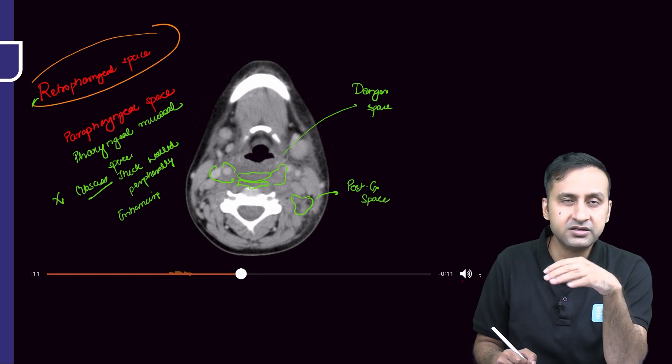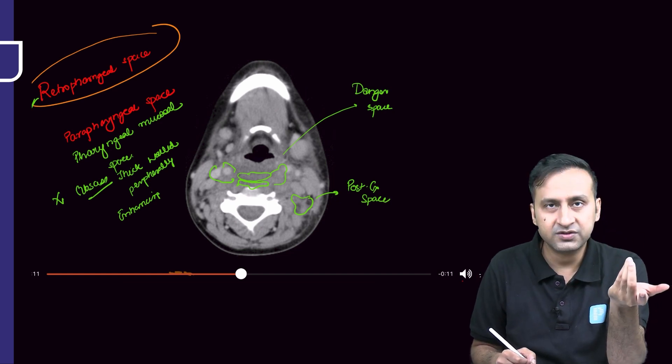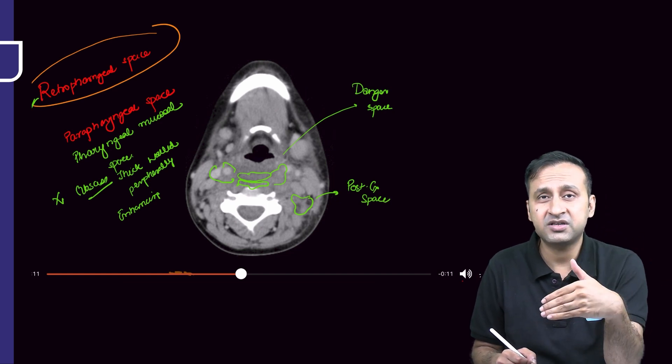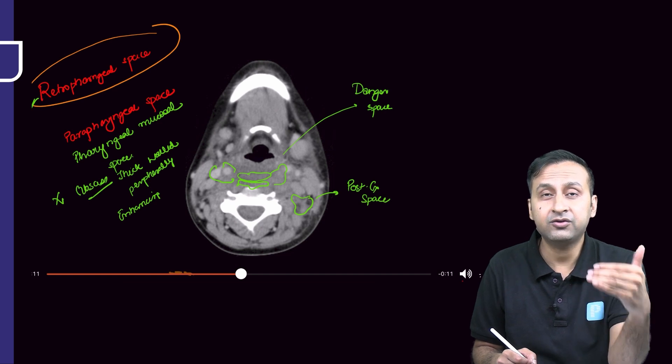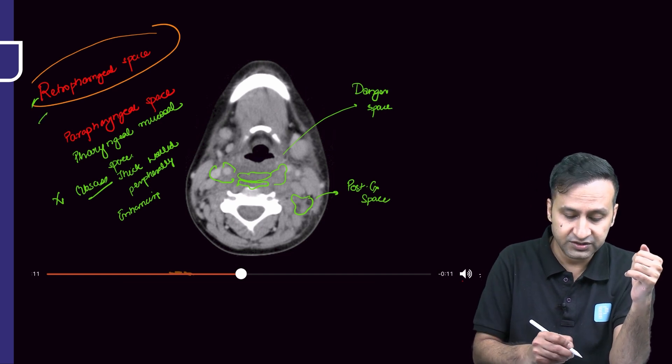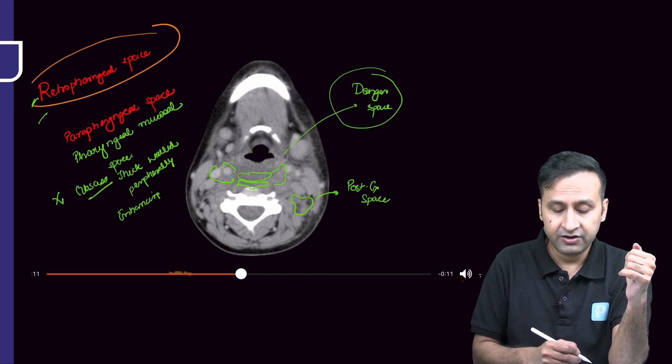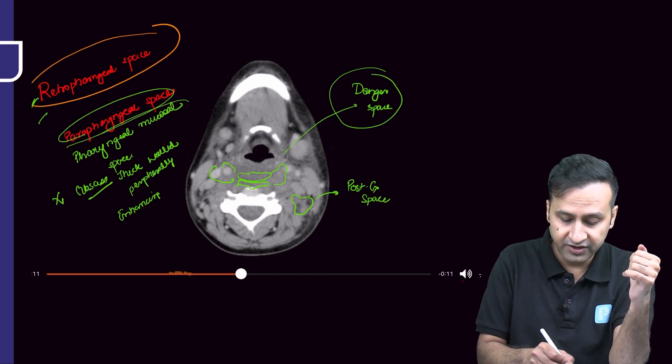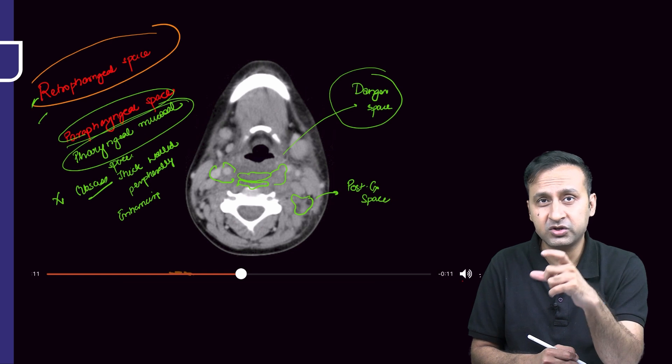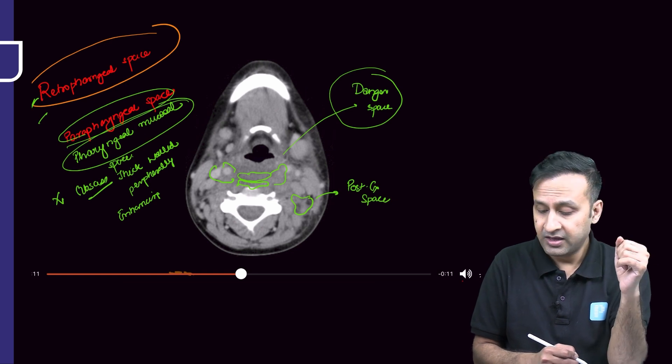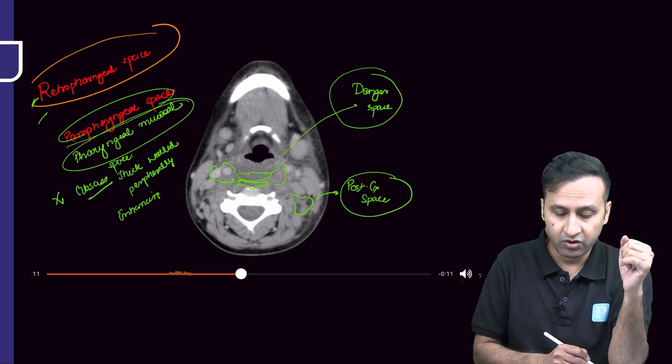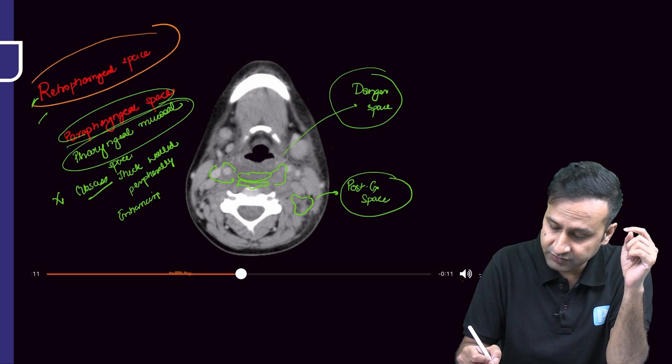This is one of those cases in which almost all the neck spaces have been involved, and those neck spaces have been involved which are very critical for life. We have posterior neck spaces like retropharyngeal space, danger space involvement, parapharyngeal space, pharyngeal mucosal space involvement along with possible involvement of the tonsillar region. We have posterior cervical space involvement and a very important thing: we have carotid space involvement.